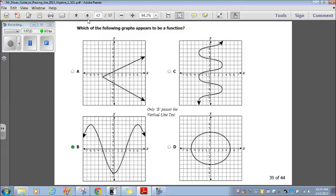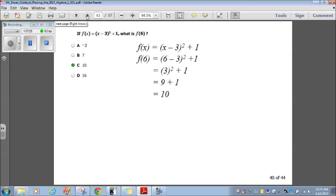Question 40 here. If F of X equals X minus 3 squared plus 1, what is F of 6? So, I just rewrote F of X equals X minus 3 squared plus 6. Now, when it says F of 6, wherever you see an X, just substitute in a 6. So, F of 6 equals 6 minus 3 squared plus 1. 6 minus 3 is 3. 3 squared plus 1. 3 squared is 9. 9 plus 1 is 10. Option C. Boom. You're done.